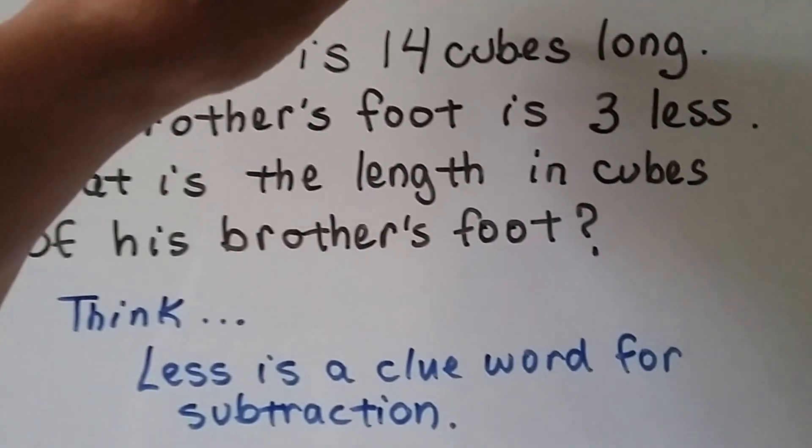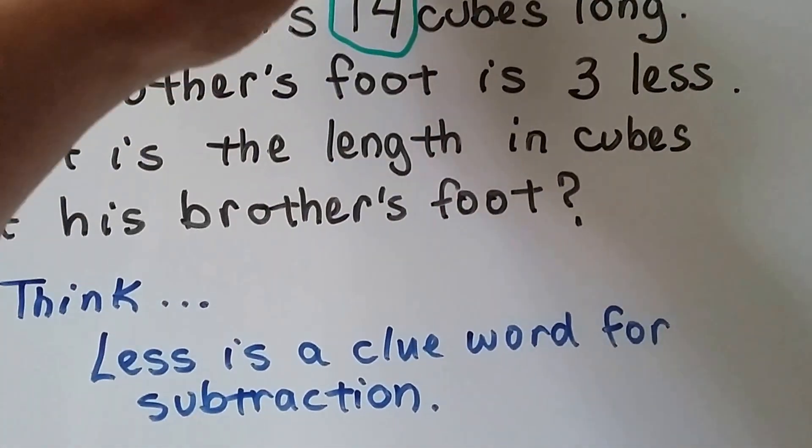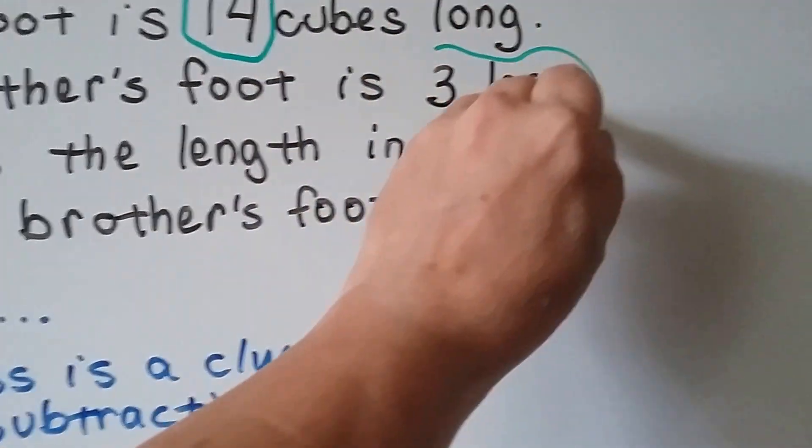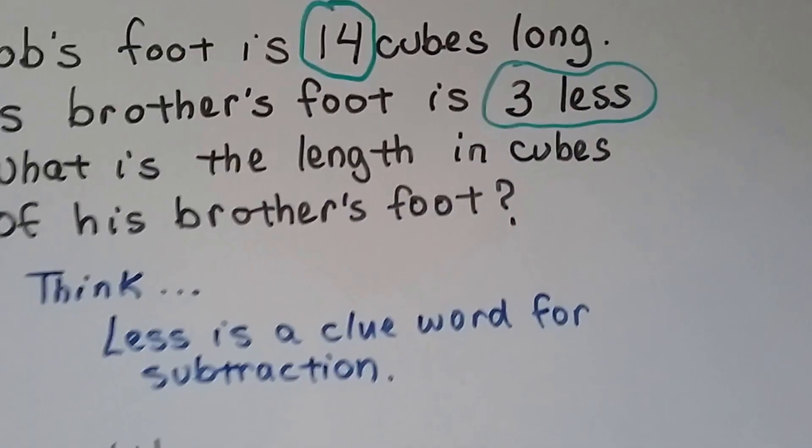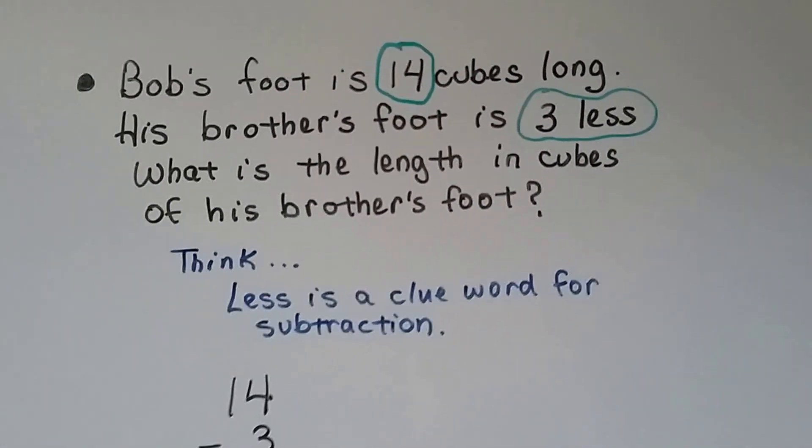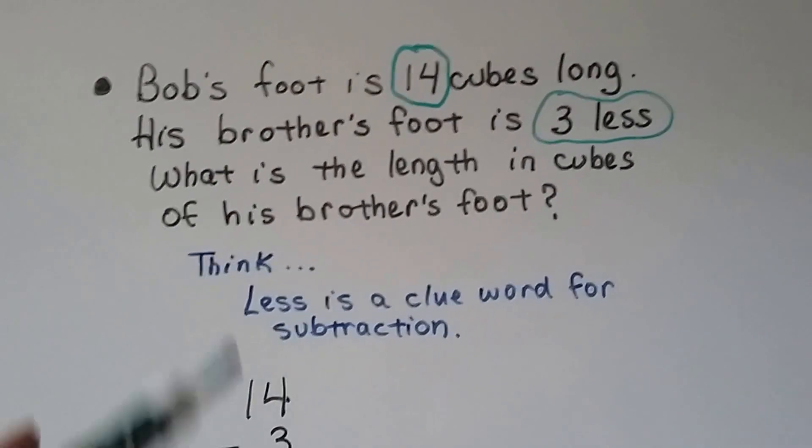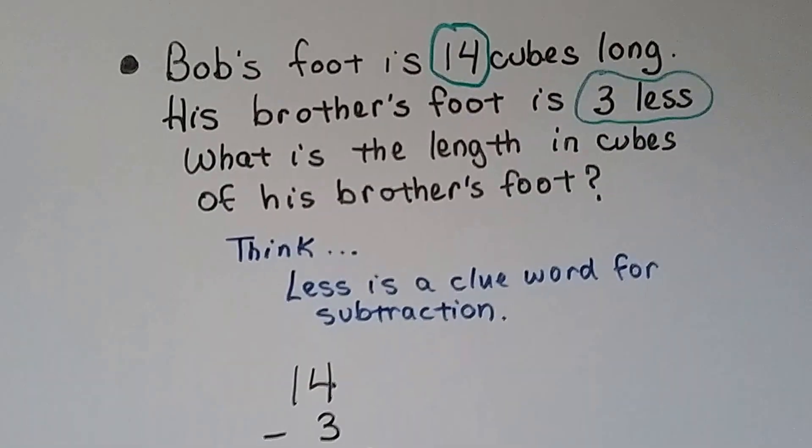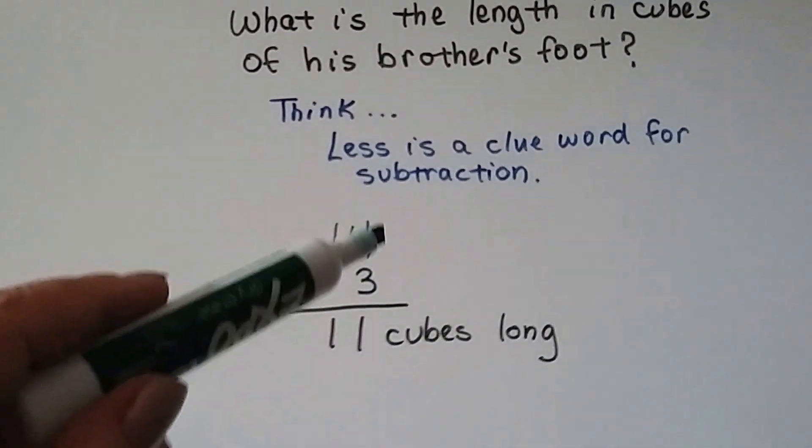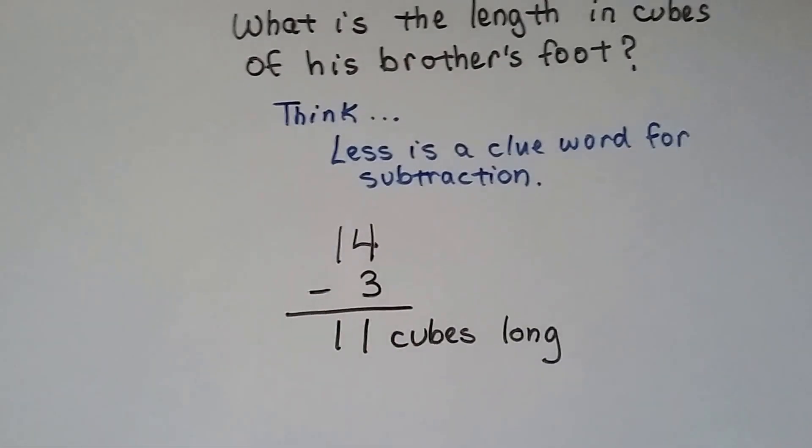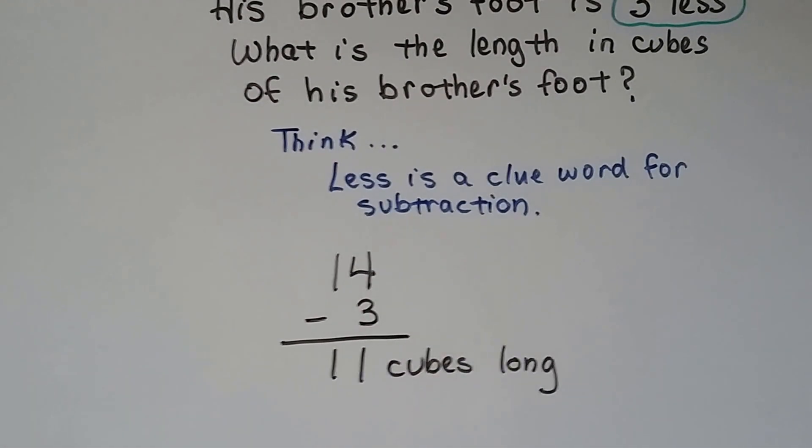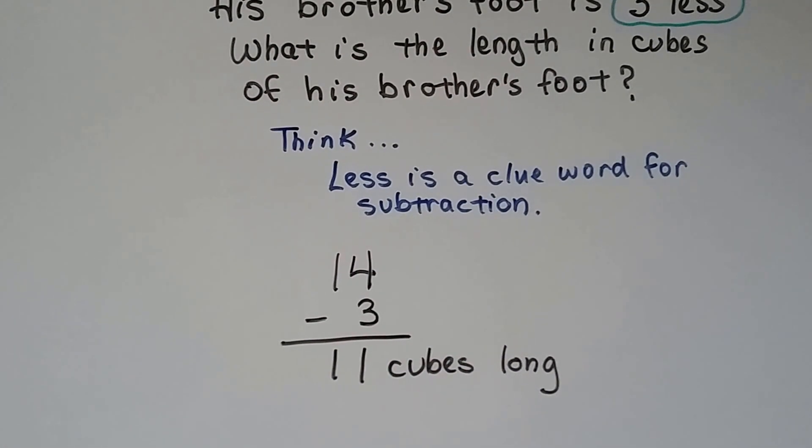So the important things in this word problem are 14 and three less. Less is a clue word for subtraction. So we need to do 14 minus three. We find out four minus three is one. We bring the one down. His brother's foot is about 11 cubes long.